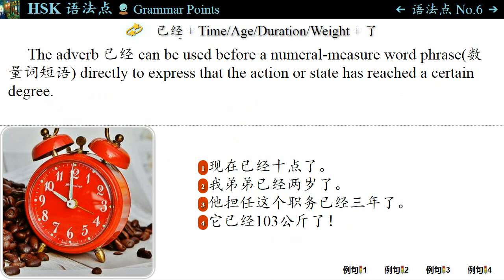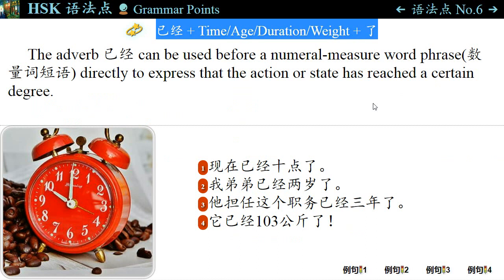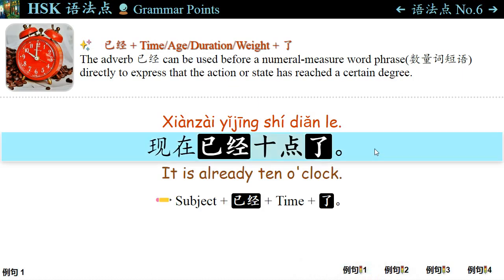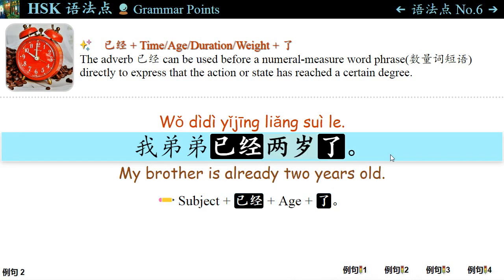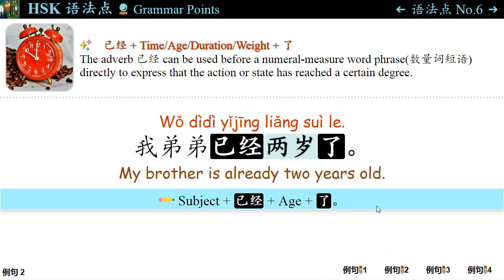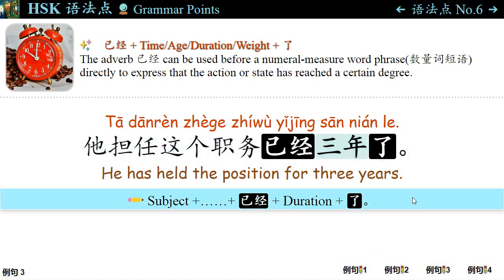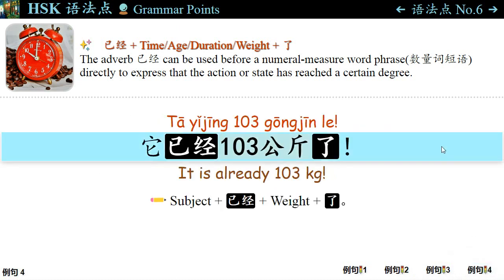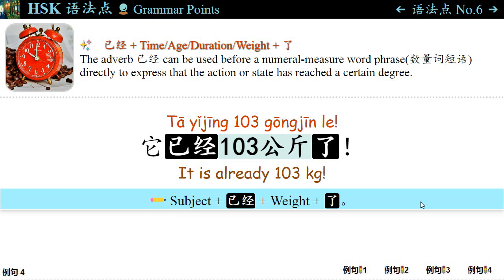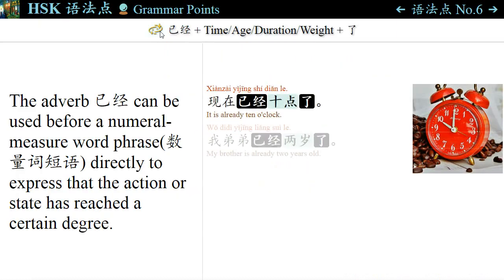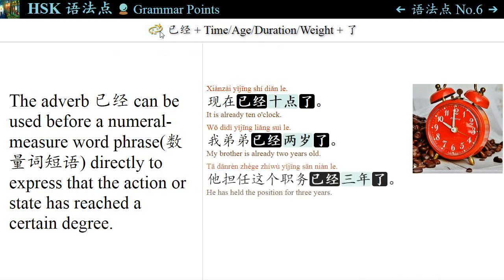语法点六: The adverb 已经 can be used before a numeral measure word phrase to express that an action or state has reached a certain degree. 例句一: 现在已经十点了。 It's already ten o'clock. 已经 plus time plus 了。 例句二: 我弟弟已经两岁了。 My brother is already two years old. 已经 plus age plus 了。 例句三: 他担任这个职务已经三年了。 已经 plus duration plus 了。 例句四: 他已经一百零三公斤了。 已经 plus weight plus 了。 Structure: 已经 plus time, age, duration, or weight plus 了。